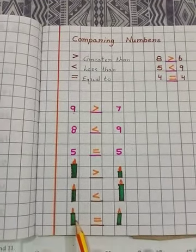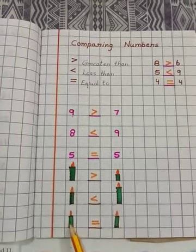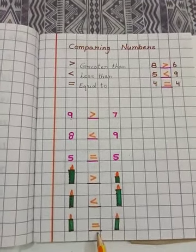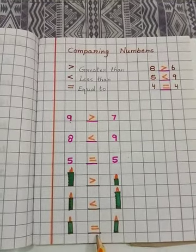And look at these two candles. These two are equal. So we use the sign of equal to. Clear?